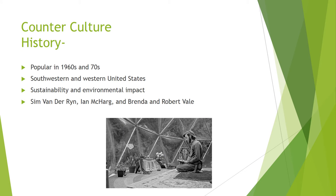The counter-culture architectural style became popular in the 1960s and 70s with the counter-cultural movement, otherwise known as the hippie movement. Mostly built in the southwestern and western United States, the main ideas for these buildings were sustainability and minimizing environmental impact. Some of the first counter-cultural buildings were pioneered by Sim Van der Ryn, Ian McHarg, and Brendan and Robert Vail.